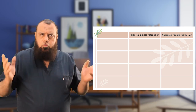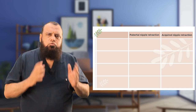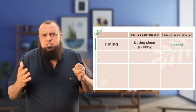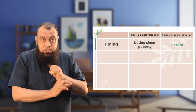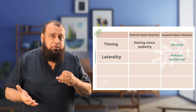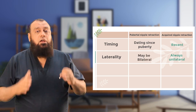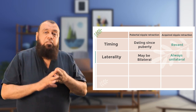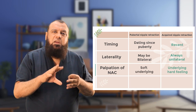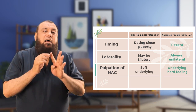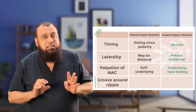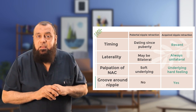To differentiate pubertal nipple retraction (normal) from acquired nipple retraction: acquired retraction is recent (not dating since puberty), always unilateral (while pubertal retraction may be bilateral), associated with hard induration below the nipple-areolar complex due to fibrosis, and shows a groove due to retraction of the nipple — not present in the pubertal type.